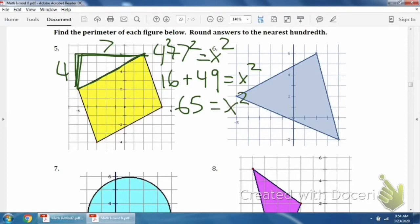So sixty-five equals x squared. But now we have to get rid of the squared, so we have the square root of sixty-five. And then the calculator, that comes out to eight point oh six. Okay, so that means this distance here is eight point oh six.